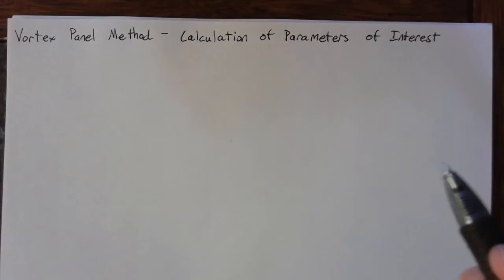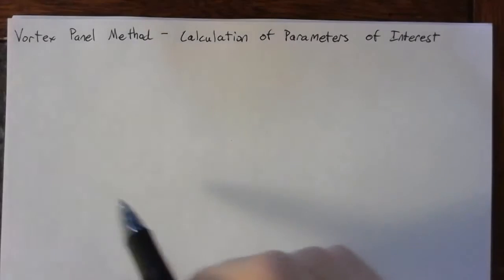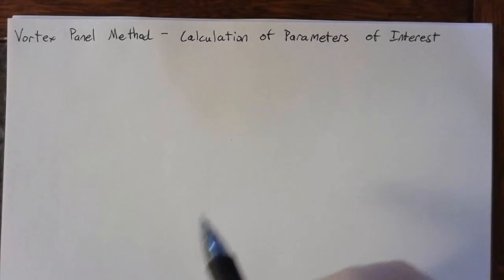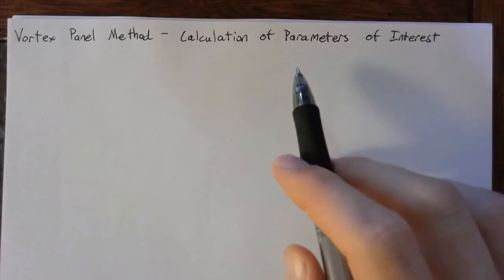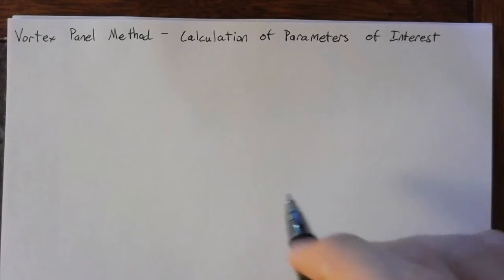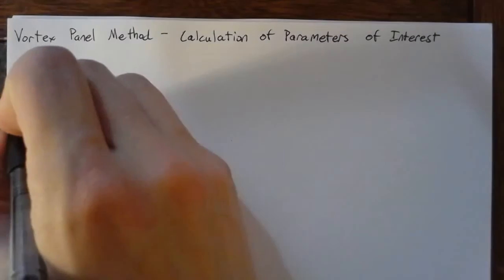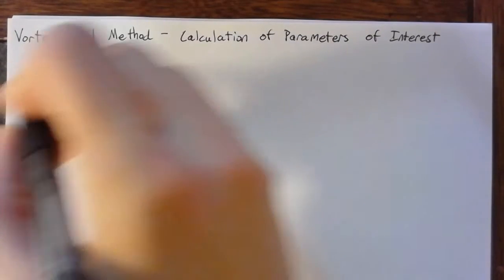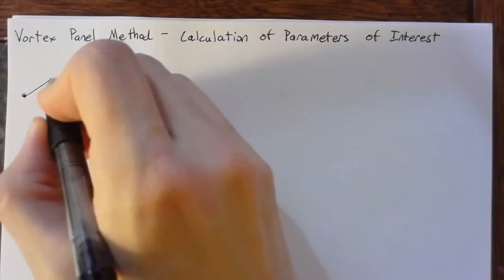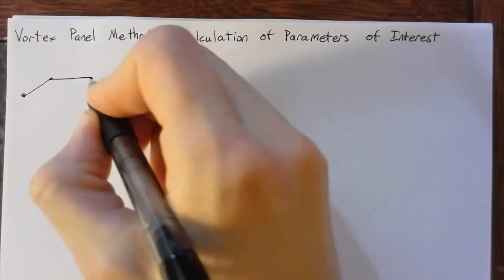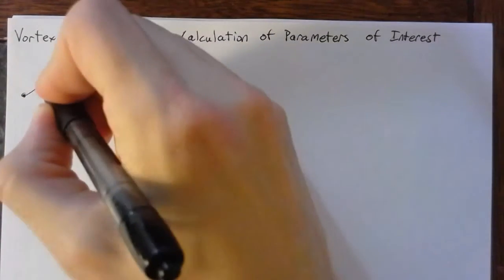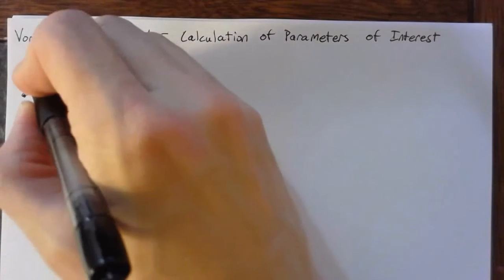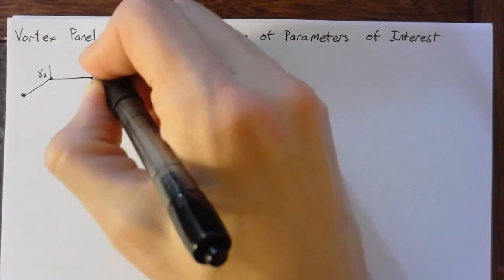Howdy. Once you've actually solved for all of your vortex strengths, then you can actually start to look at the typical parameters of interest. So we're saying that for our panel, we have already found the various gamma values of each panel.